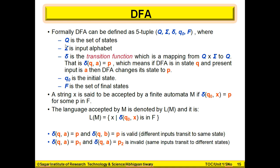The five tuples are: Q — a set of states; Sigma — the set of input alphabet; Delta — the transition function, which is a mapping from the Cartesian product of the set of states with the input alphabet, mapping to again a state. So this transition function takes a state Q and an input A and maps to a state P. Q0 is the initial state, and F is the final state. Remember, we can have more than one final state.